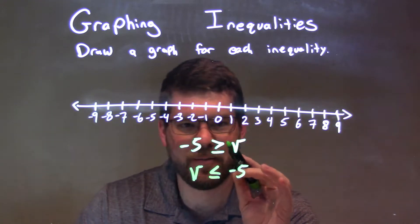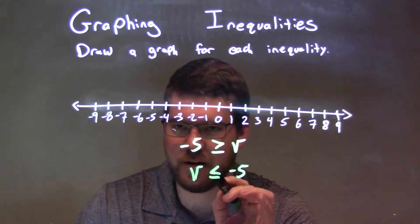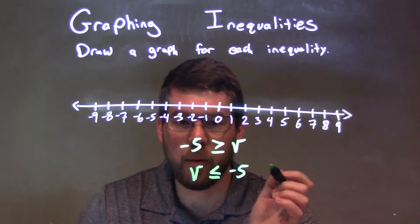The way I always match it, the pointy side is facing the V. Make sure the pointy side of the inequality is still facing the V when you flip it. But we're good.